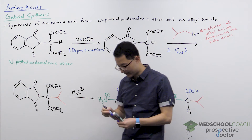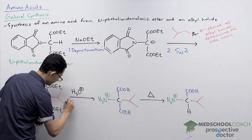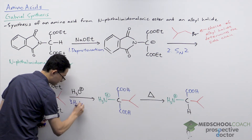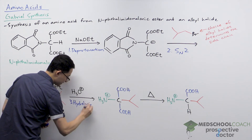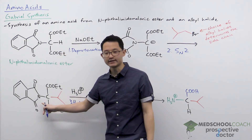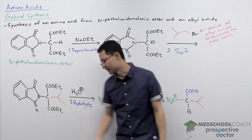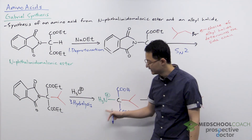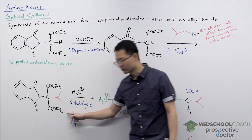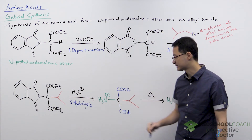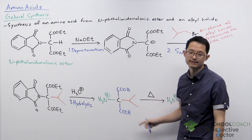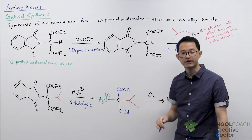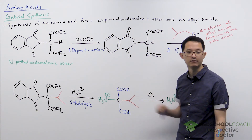The next step is step three: hydrolysis. Under acidic conditions, the protecting group on the nitrogen will get hydrolyzed, giving you the amino group back, and the esters will get hydrolyzed into carboxylic acids. At this point, the molecule is starting to look pretty close to an amino acid — you've got several of the key components.